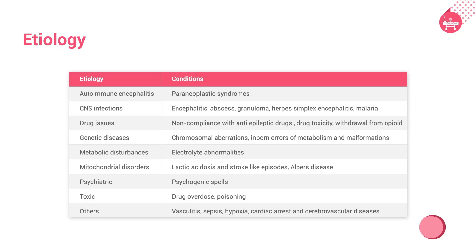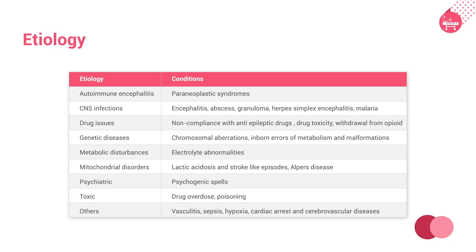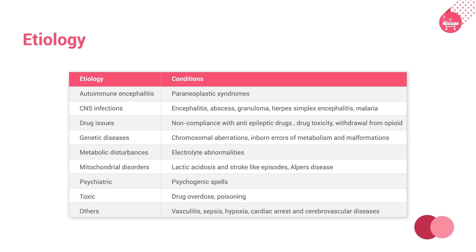Drug issues include non-compliance with anti-epileptic drugs, drug toxicity, and withdrawal from opioids. Genetic diseases include chromosomal aberrations, inborn errors of metabolism, and malformations. Metabolic disturbances include electrolyte abnormalities, hypercarbia, hypoglycemia, hypoxia, and mitochondrial disorders.